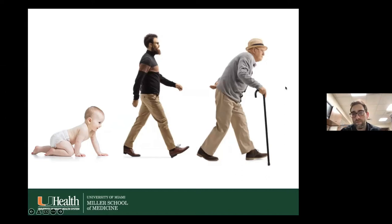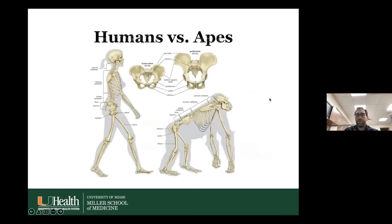You can see the elderly man more hunched over and using a cane — there are reasons for that. Looking at anatomy between humans and their cousins the apes, the human spine has an S-shaped curve: cervical lordosis, thoracic kyphosis, lumbar lordosis, and sacral kyphosis, with a specific pelvis morphology that is more retroverted compared to what you see in the ape.